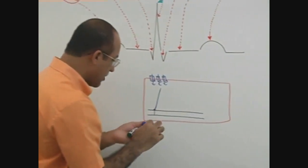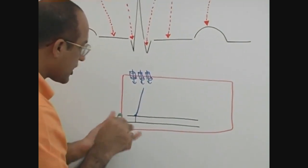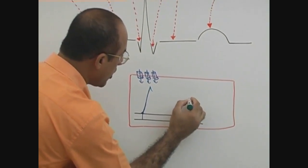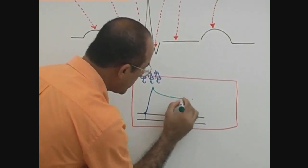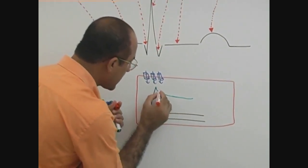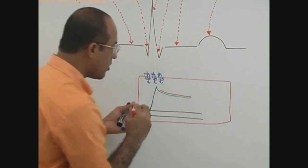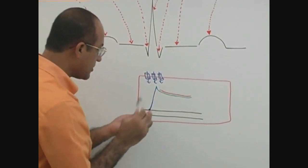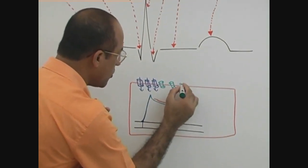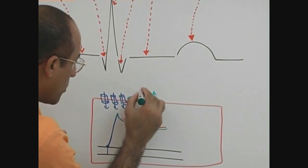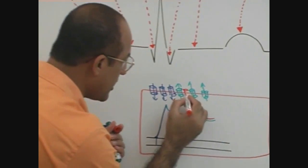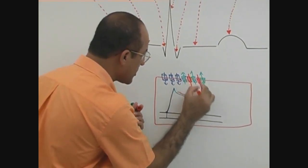During the ST segment, potassium loss has started. Potassium channels are working as well as calcium channels are also working. It means that potassium is going out — potassium channels open, so potassium is going out. But at the same time, calcium channels are also open, so calcium is coming in.